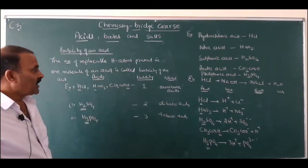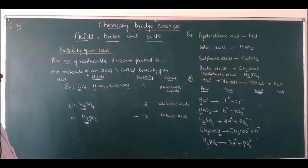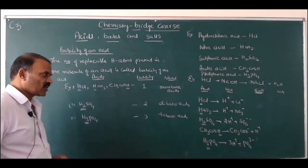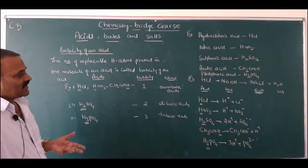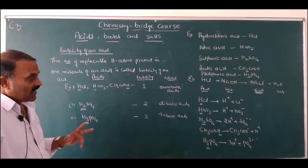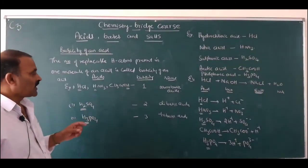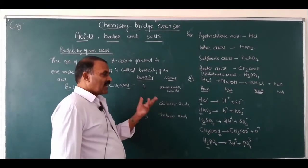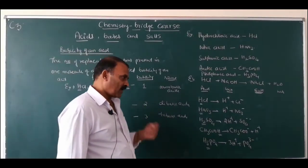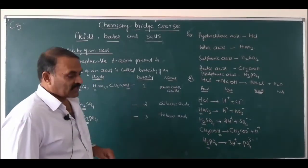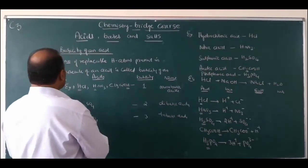So this is the meaning of basicity of an acid. An acid is a substance which is sour in taste, turns blue litmus paper red, reacts with bases forming salts, and contains replaceable hydrogen atoms. Depending upon the number of replaceable hydrogen atoms present in one molecule, acids are called monobasic, dibasic, or tribasic acids. Now we will know what are strong acids and weak acids.